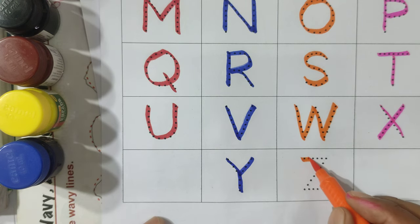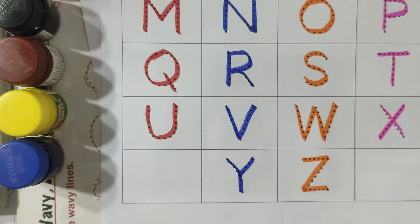Z. Z for Zebra. Zebra means Chitdar Ghoda. Z, Z for Zebra.